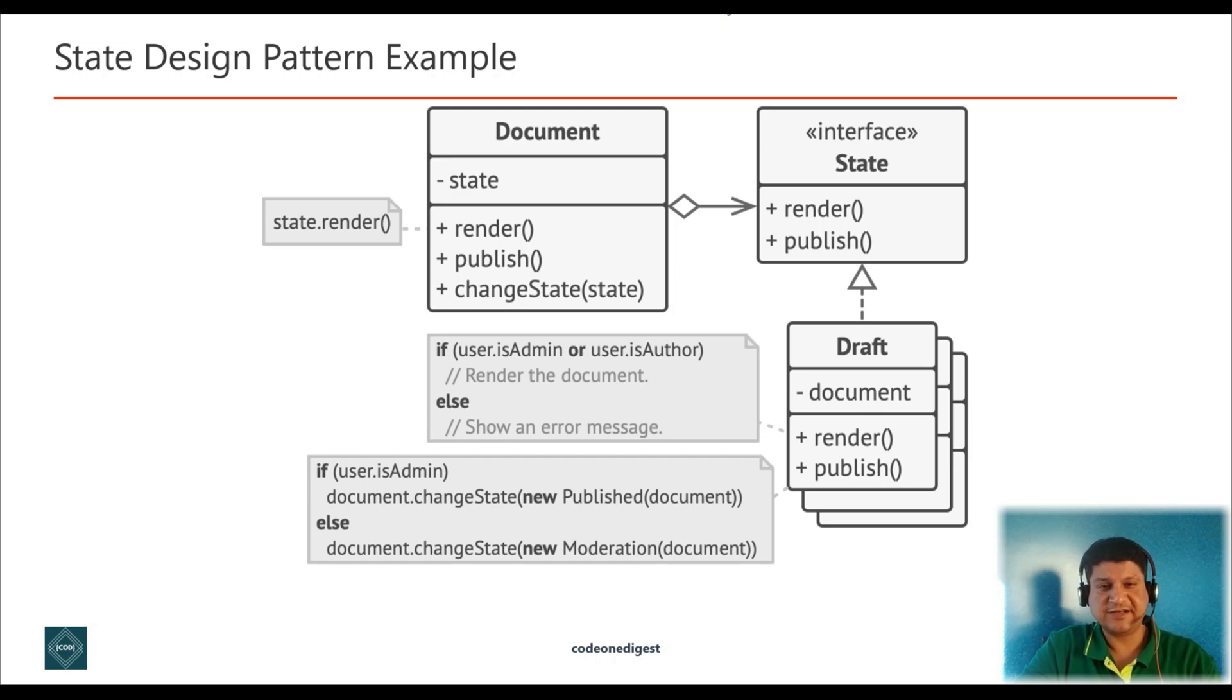So, here object is changing its behavior as an embedded state object has changed. But remember that this is possible only if all the state classes are derived from a common interface. Point to note here is, this structure may look very similar to a strategy pattern, but there is one key difference between state and strategy. In the state pattern, the particular states may be aware of each other and initiates transition from one state to another state. Whereas, strategy design pattern would never know about each other.